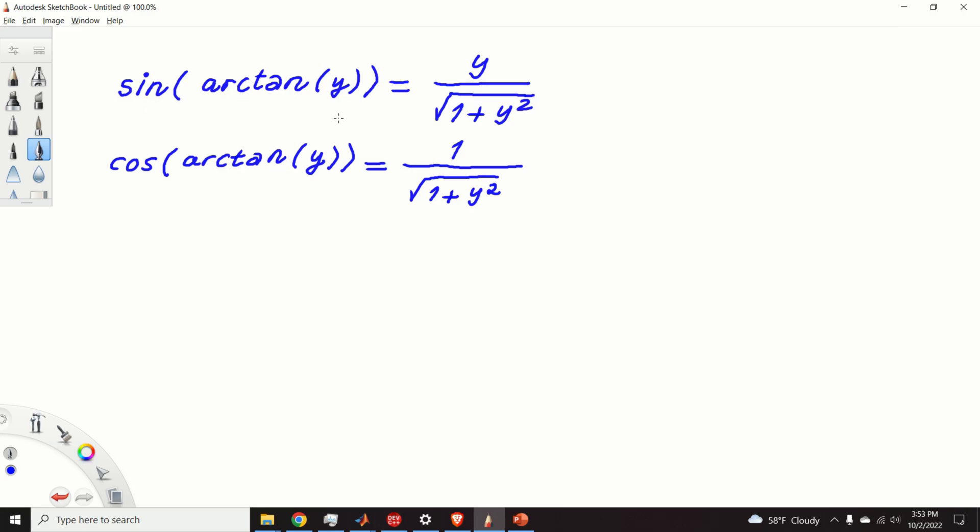Basically, sin(arctan(y)) is equal to y over the square root of 1 plus y squared. To me, this formula looks very elegant, and consequently, I became intrigued by its proof. And in this video, I will explain how to prove this identity.